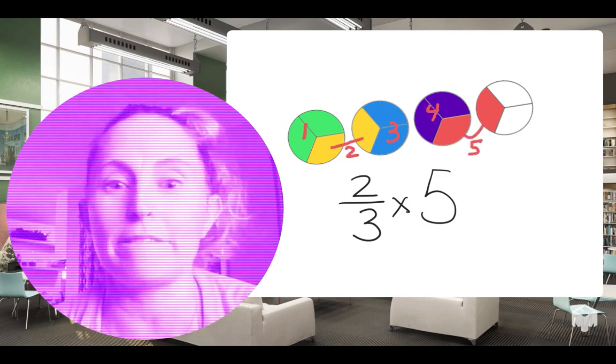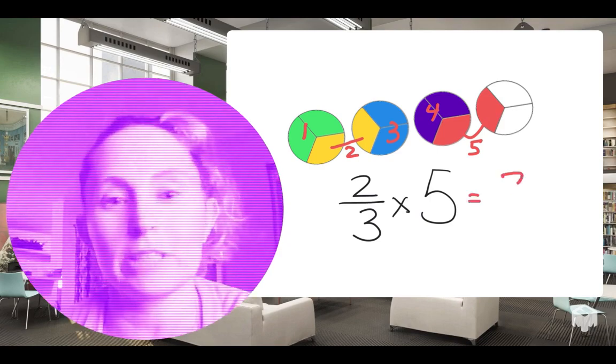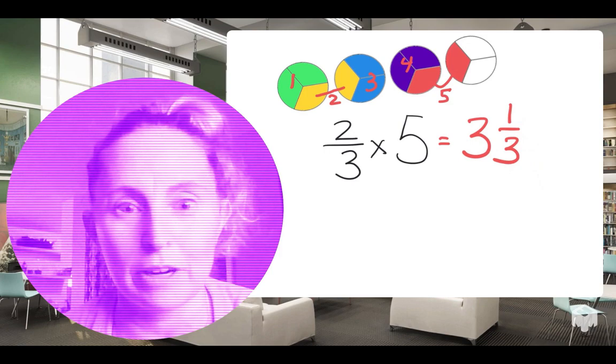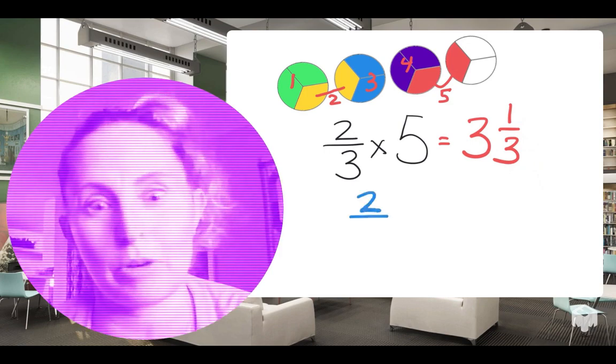Now, I can count to make sure I've got those five groups, one, two, three, four, and five. And how much do I have all together? I've got three wholes and one-third left over. Now, let me show you that with the sixth-grade algorithm.